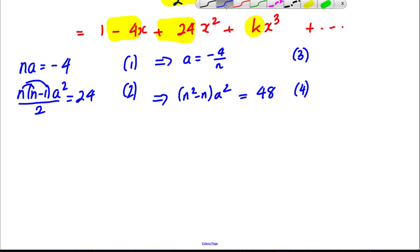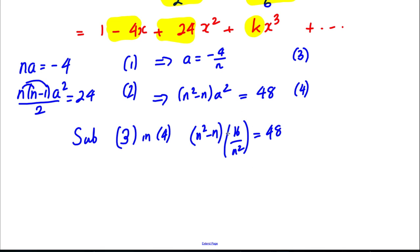Now, let's go for a substitution. Let's put 3 in 4. So 3 in 4. Let's say sub 3 in 4. So we would get N squared subtract N, and then we would get multiplied by that squared, which would be 16 over N squared is equal to 48.